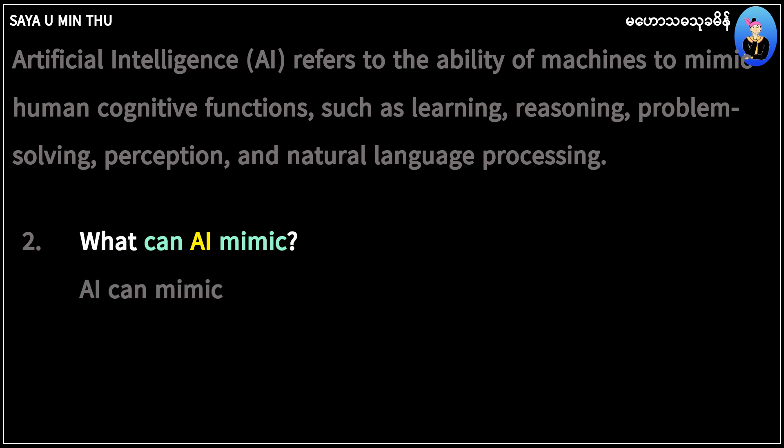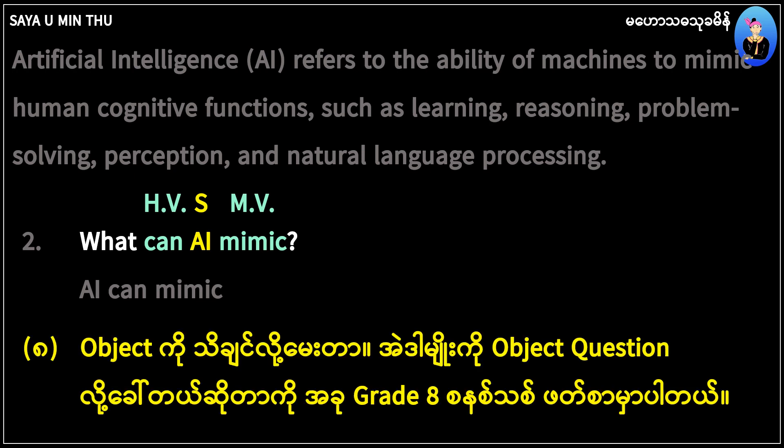What can AI mimic? 'Can' is the auxiliary verb. 'AI' is the subject. 'Mimic' is the main verb. In your sentence, 'what' is your question word — what is the object? Object is your name — this is the object question.